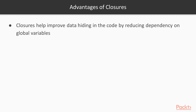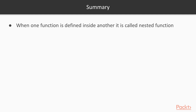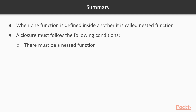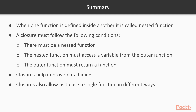The advantages of closures are: they help improve data hiding by reducing dependency on global variables — instead of global variables, we use closures to access enclosing scope variables; they allow a single function to be used in multiple different ways as seen in the examples; and they allow programmers to implement decorators, which we'll cover in subsequent sections. In summary: when one function is defined inside another it is a nested function; a closure requires a nested function that accesses an outer variable, with the outer function returning that nested function; and closures help with data hiding and reuse.